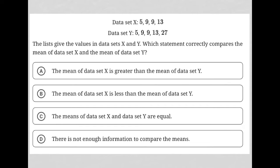This question starts off by providing us with two data sets, data set X and data set Y. Both sets have five, both have nine, both have a second nine, and both have a 13. But only data set Y has a 27. That's the only difference.